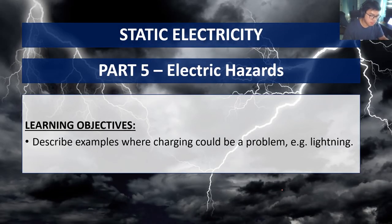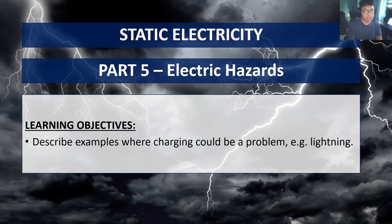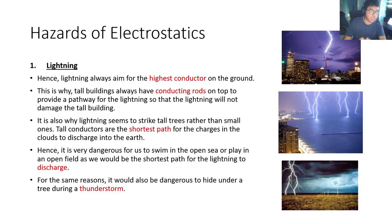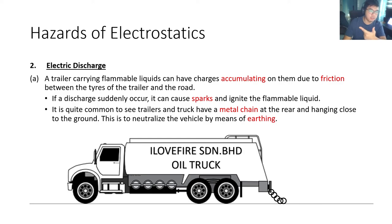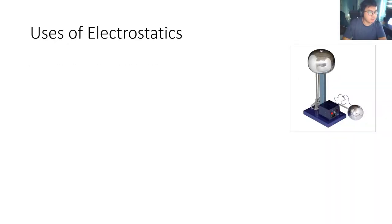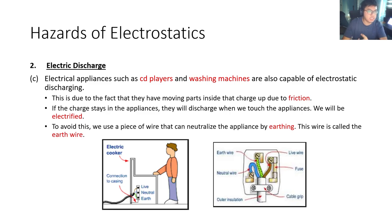To summarize: discharge can happen when there's a lot of friction, causing an object to be electrostatically charged. When the object meets a neutral object connected to the ground, discharge can occur and cause problems. We looked at four examples: lightning, discharge from vehicles carrying flammable liquids, protecting electronic equipment from electrostatic discharge, and appliances like CD players and washing machines — and how we use the earth wire to keep these appliances safe.